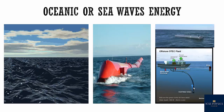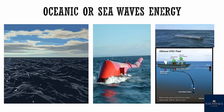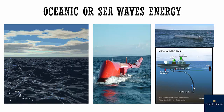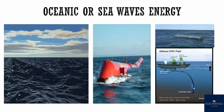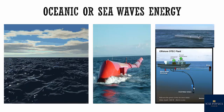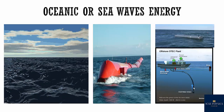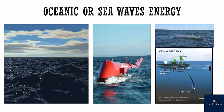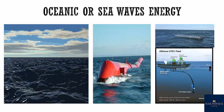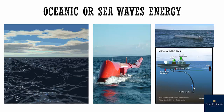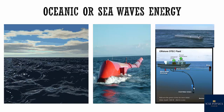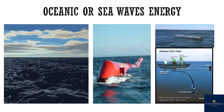The third type is oceanic or sea waves energy, which is divided into two types. The first is ocean thermal energy. Water at the surface of the ocean gets heated by absorbing heat from the sun, while water at the deeper levels remains cold. The difference between these two temperatures gives rise to oceanic thermal energy. The difference is always 20 degrees or more. The energy available due to this temperature difference between the surface and deeper levels of the ocean is called ocean thermal energy.